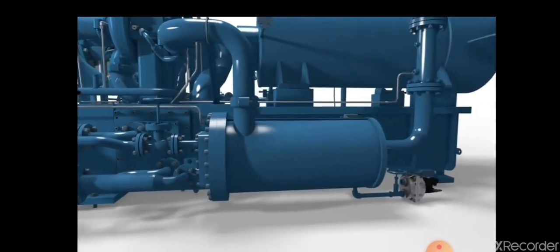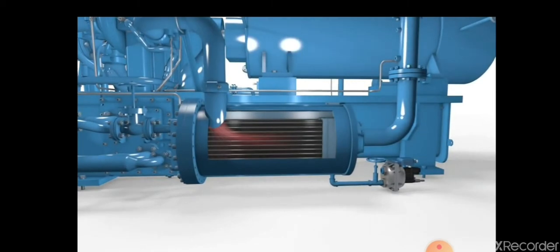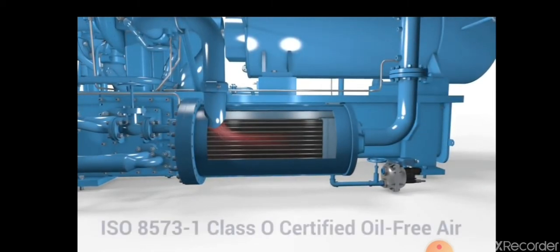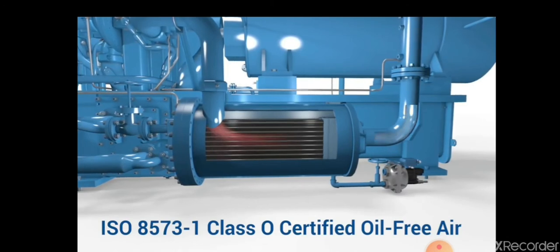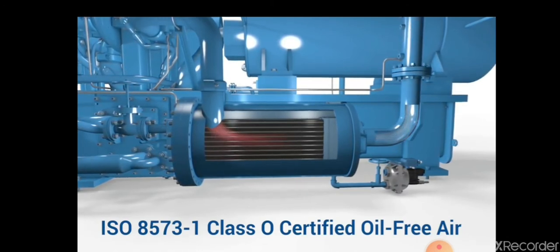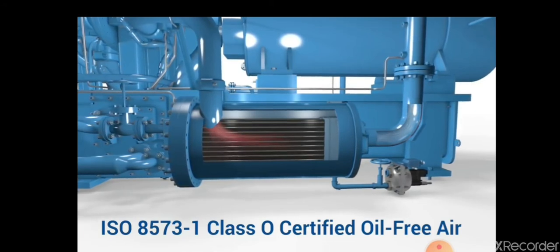The compressed air or gas then moves to the after-cooler, where it's cooled and any remaining moisture is removed. This highly energy-efficient process concludes with the delivery of ISO 8573-1 Class 0 certified oil-free air, ready to power a variety of industrial applications.